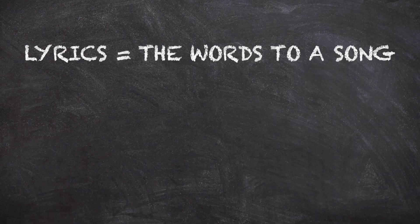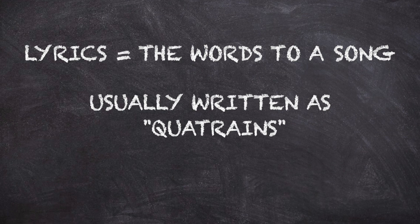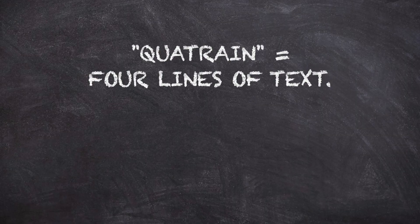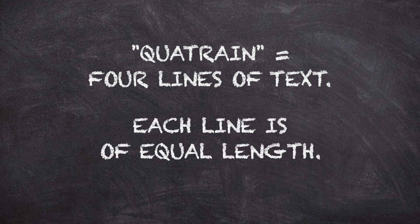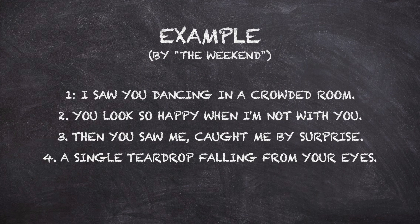To start with, let's talk about the words. In music, those words are called lyrics. Lyrics are usually written in the form of quatrains. But that makes it sound hard, and as we already covered, it's really not. So what's a quatrain anyway? A quatrain, as its name suggests, is four lines of text, where each line is of equal length — usually four to eight beats, depending how fast you count. You can use each line to express your ideas. You don't have to fill up all the beats. You just can't go over.